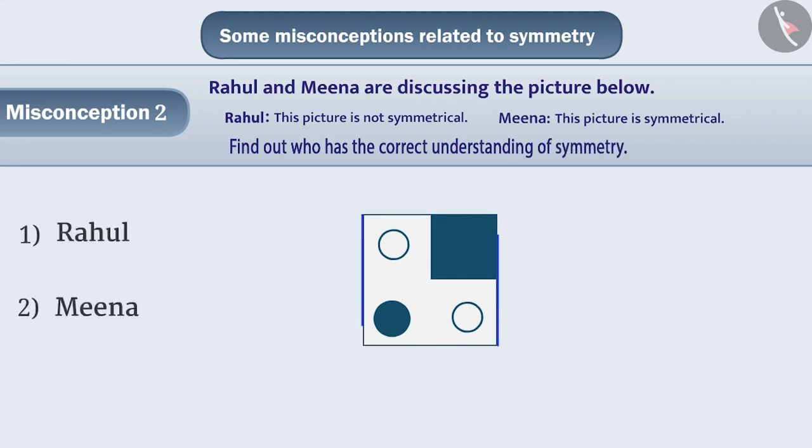Some children, in order to identify whether a figure is symmetrical or not, just observe whether two parts can be formed in the vertical direction of the shape identical to each other or not. For example, here Rahul noticed that after drawing two parts in the vertical direction of the figure, it is known that they are not reflections of each other.